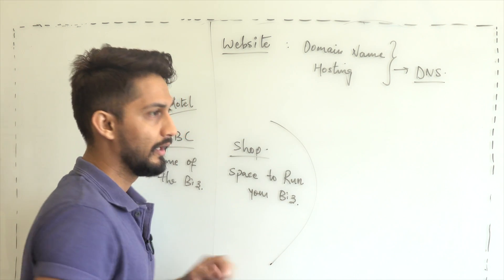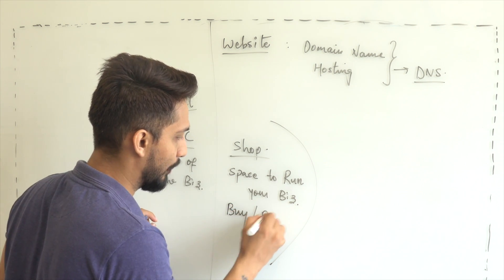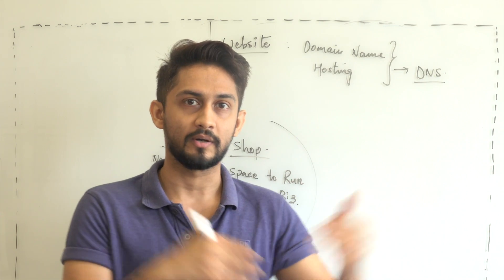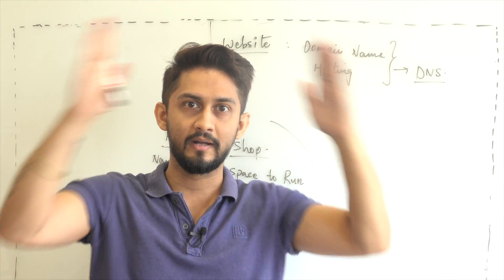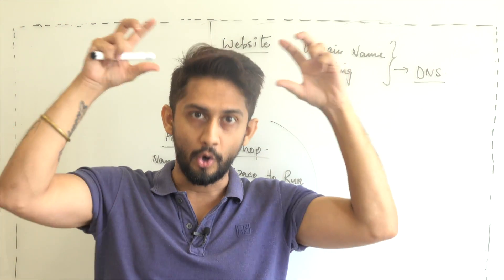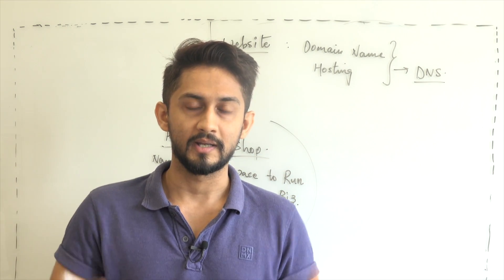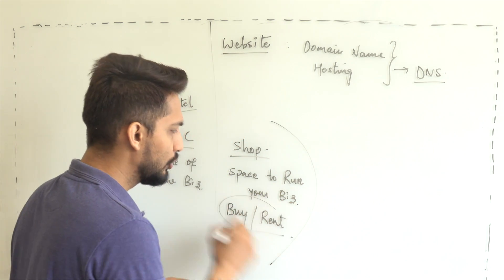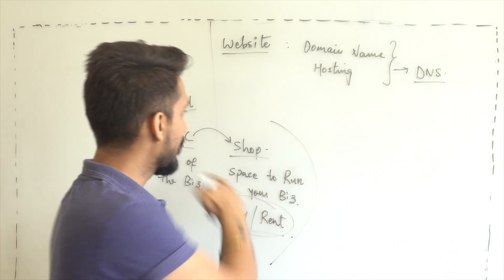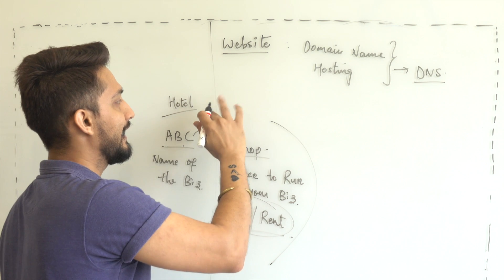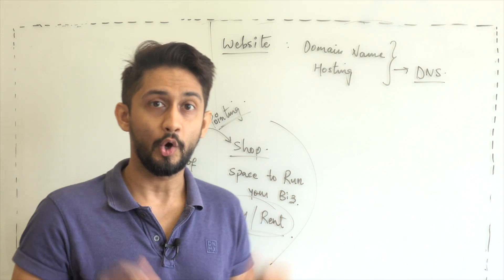Once you have that, it's your responsibility — once you have that shop, you might buy it or you might rent it. Either you will buy that place or rent it. Once you are done with that, you have to have a banner or a hoarding like 'ABC chain of restaurants' on that place, so that people passing by recognize what that particular location is for. That name is now pointed to that particular place — in layman terms, let's call this pointing your name to the space.